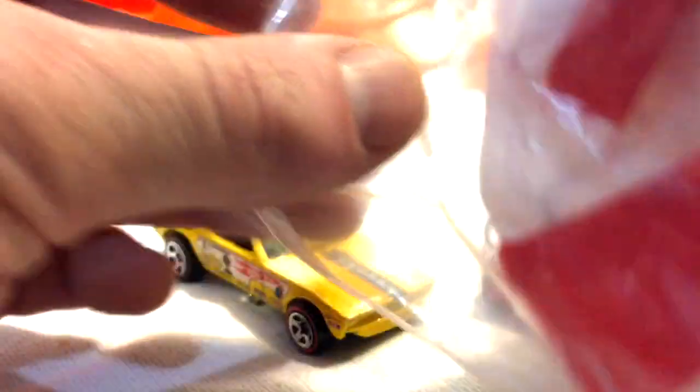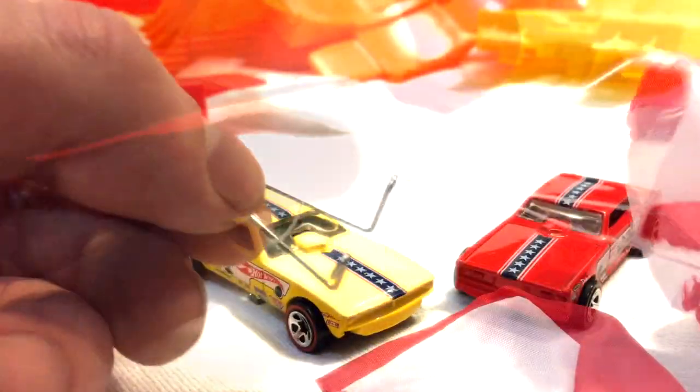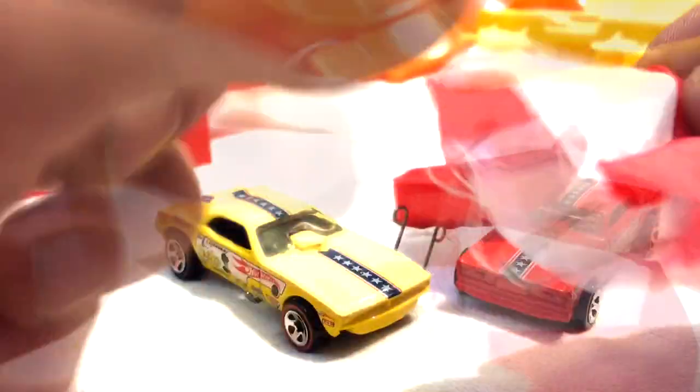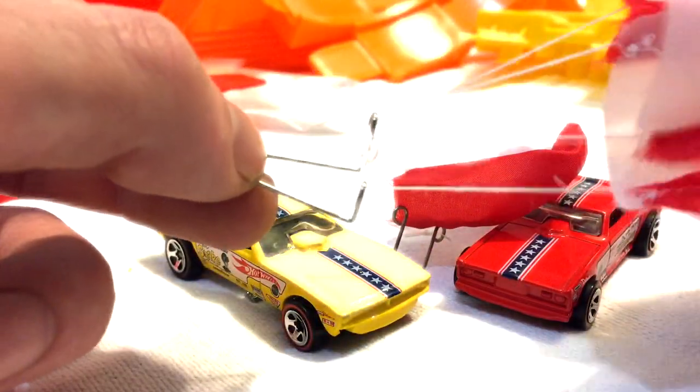These are the parachutes that come with it. Seems like it's got a little metal clip on it that attaches to the car somehow. That's crazy. A little parachute on the Hot Wheels.